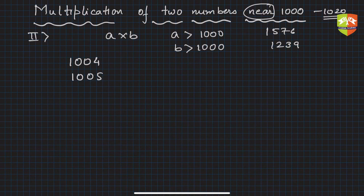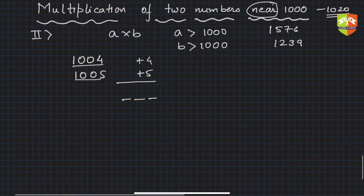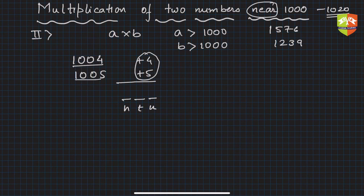Now how far is this from thousand? Plus four and this one plus five. But the only thing we have to remember in this case is we have to allocate three places for hundreds, tens, and units place of the product. Now how to get those? Multiply four times five is twenty, so simply write twenty, and since there is nothing, you'll write zero.